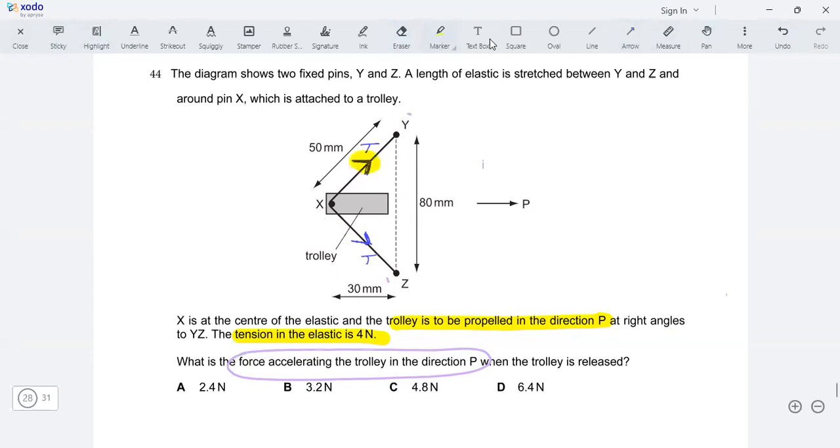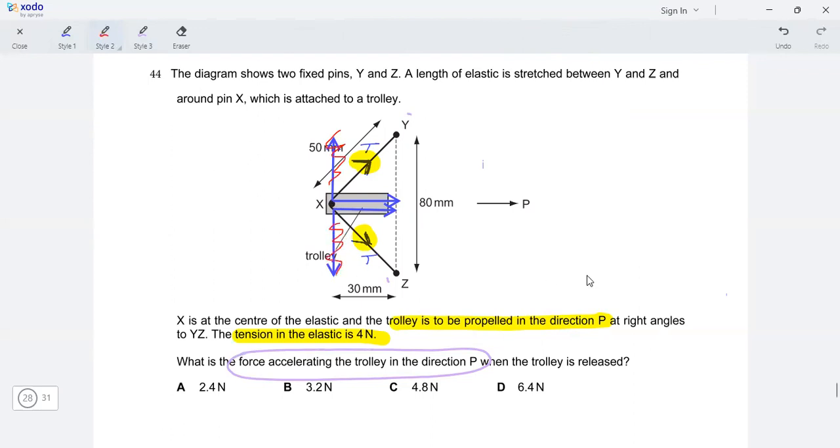Starting with this tension, this would be the horizontal component. This would be the vertical component. Very similarly, we can get the components for this tension down here. And it's going to be the same. This is the horizontal component. And this is the vertical component. All right. So we are not concerned with the vertical components right now, because we need to find the horizontal force. So let's just ignore these vertical components.